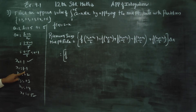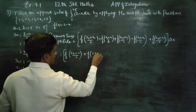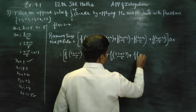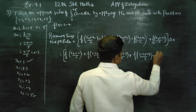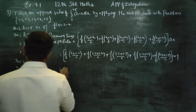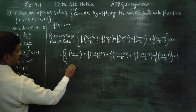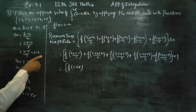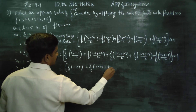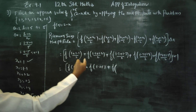Substituting values: f of (1 plus 1.1 by 2) plus f of (1.1 plus 1.2 by 2) plus f of (1.2 plus 1.3 by 2) plus f of (1.3 plus 1.4 by 2) plus f of (1.4 plus 1.5 by 2), into delta x 0.1. The midpoints are: 1.05, 1.15, 1.25, 1.35, and 1.45.